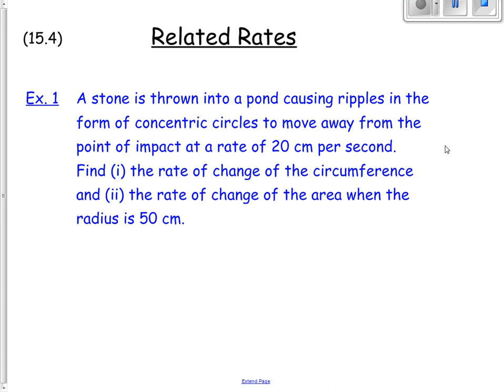The first example we have is a stone that's thrown into a pond causing ripples in the form of concentric circles to move away from the point of impact at a rate of 20 centimeters per second. We want to find the rate of change of circumference and the rate of change of area with respect to time when the radius is 50 centimeters.